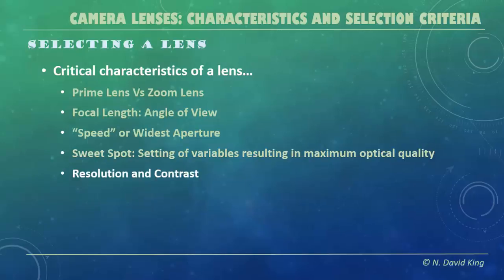How about resolution and contrast? These are measured two different ways. LPMM stands for line pairs per millimeter — a way of measuring resolution: how many line pairs per millimeter can you record and still differentiate between them? The MTF curve helps combine both the resolution measurement and a contrast measurement to give us a more accurate picture of how that lens works. There's an illustration about how the MTF curve works in the handout.